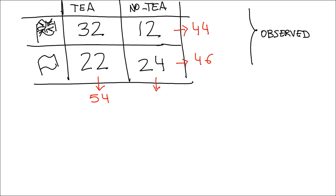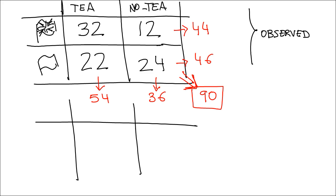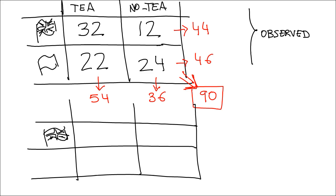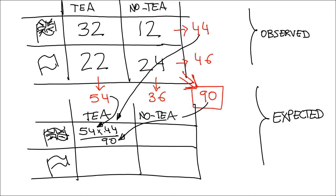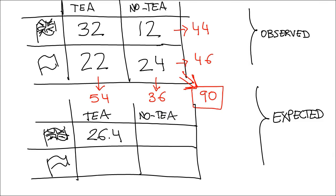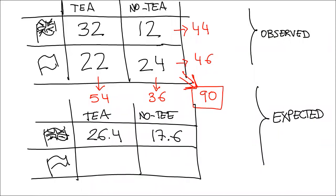How do you calculate the expected frequencies? The fastest way is to calculate the total of the rows and the total of the columns, and then the grand total — the total number of individuals. With these numbers you can calculate the expected frequencies. To know the expected value in each cell, you multiply the total of the column by the total of the row and divide by the total number of individuals. If you do this for each one of the cells, you will end up with a table of expected frequencies in each category.